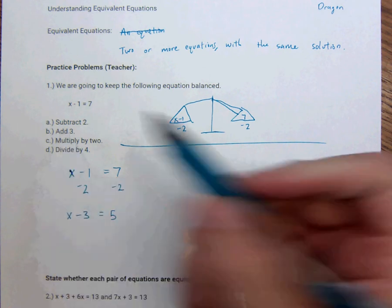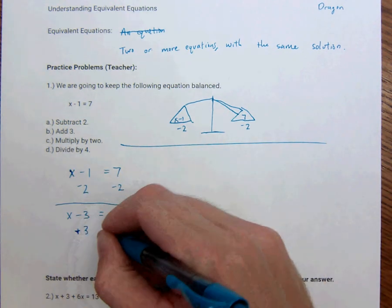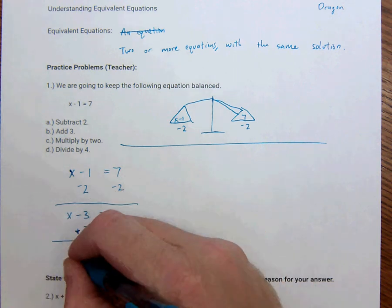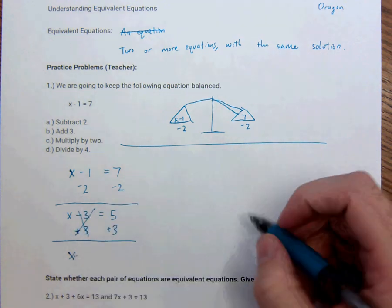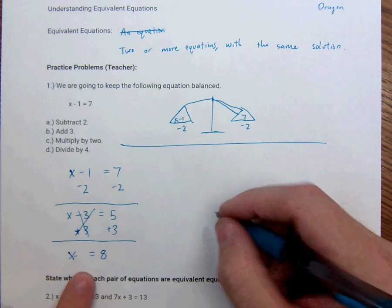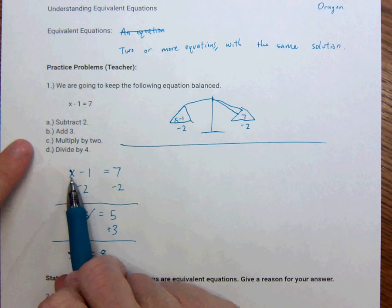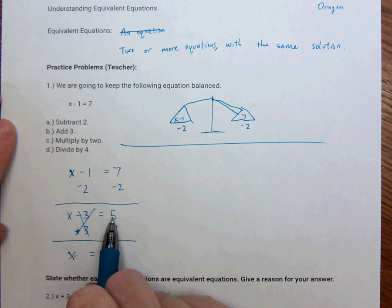So here, I want to add 3 now. So I'm going to add 3 here, add 3 here. x minus 3 becomes just x, because negative 3 plus 3 goes away. And then 5 plus 3 is equal to 8. And that's technically what x is equal to. x is equal to 8 in this equation. 8 minus 1 is 7. That's true. And 8 minus 3 is equal to 5. That's true.